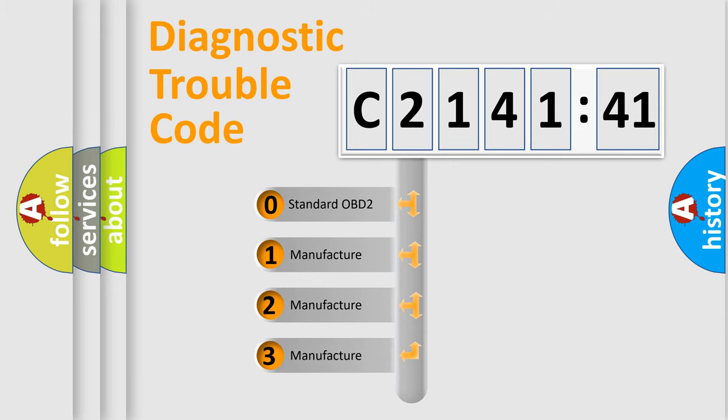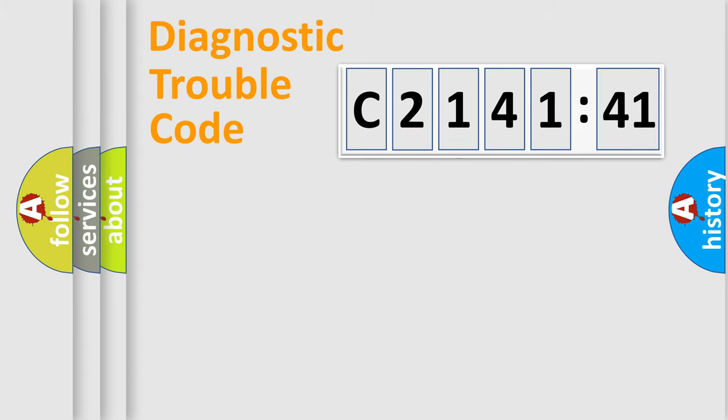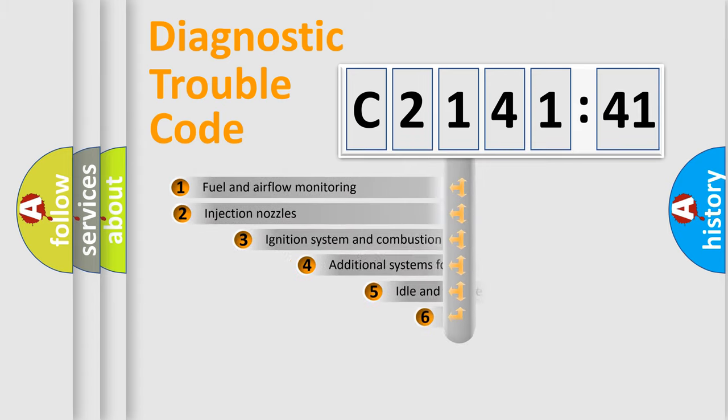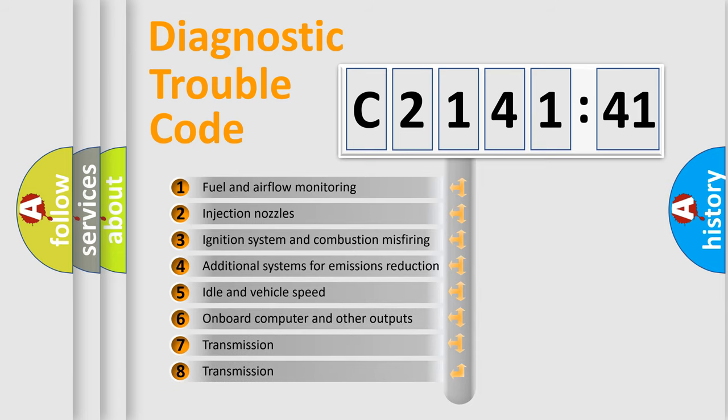This distribution is defined in the first character code. If the second character is expressed as zero, it is a standardized error. In the case of numbers 1, 2, or 3, it is a more specific expression of the car-specific error.